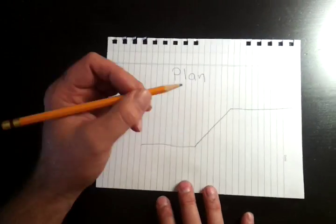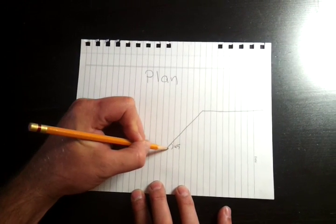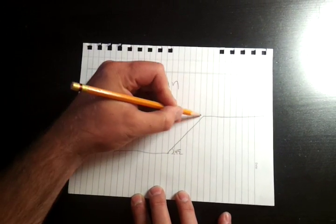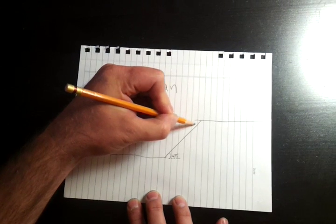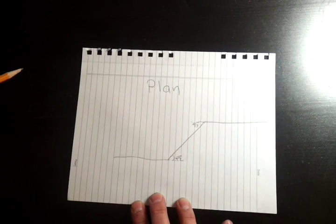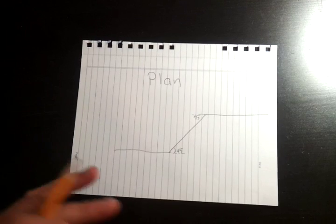So this angle here is a forty-five if we were to continue that out straight, and that angle there is a forty-five if we were going to continue it straight.